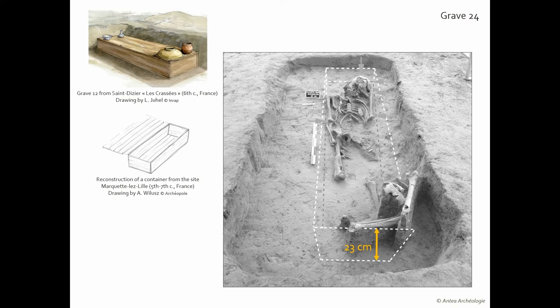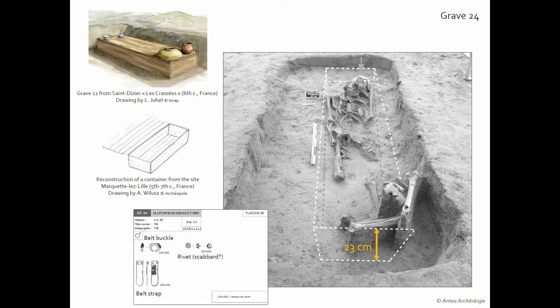The location of bone disturbances and the study of burial practices at Ilford both suggest that an object placed around the neck of the body was removed. Several fragments of iron artifacts discovered in the pelvis area allow us to conclude that additionally a belt and a weapon were probably taken.